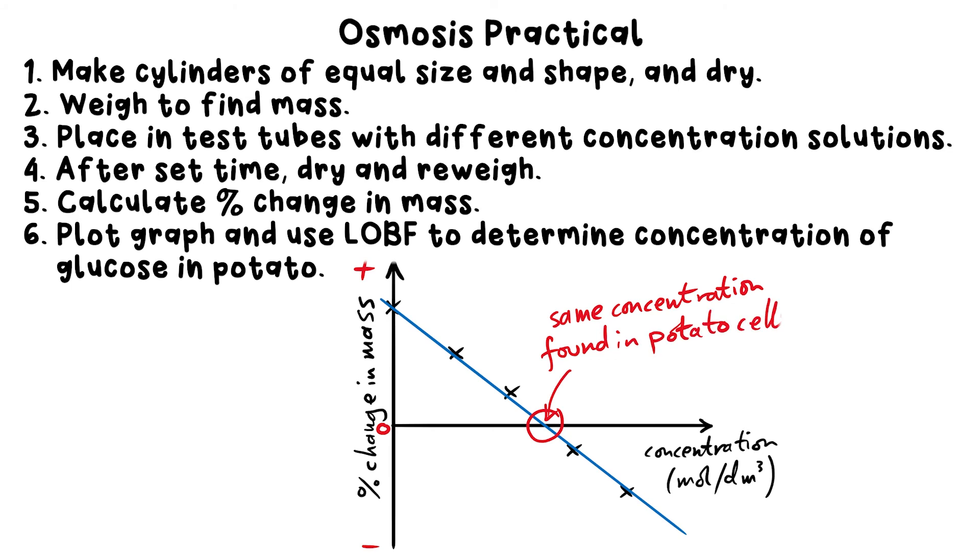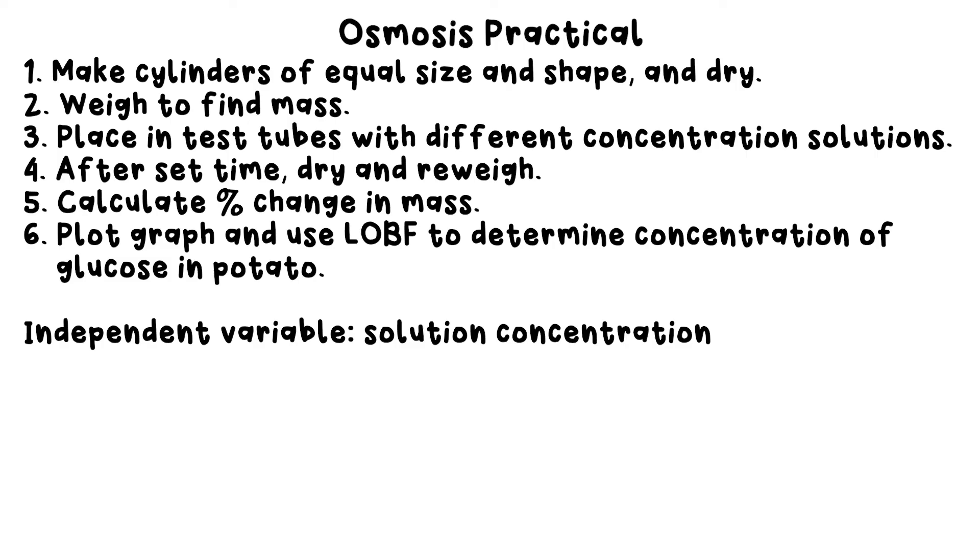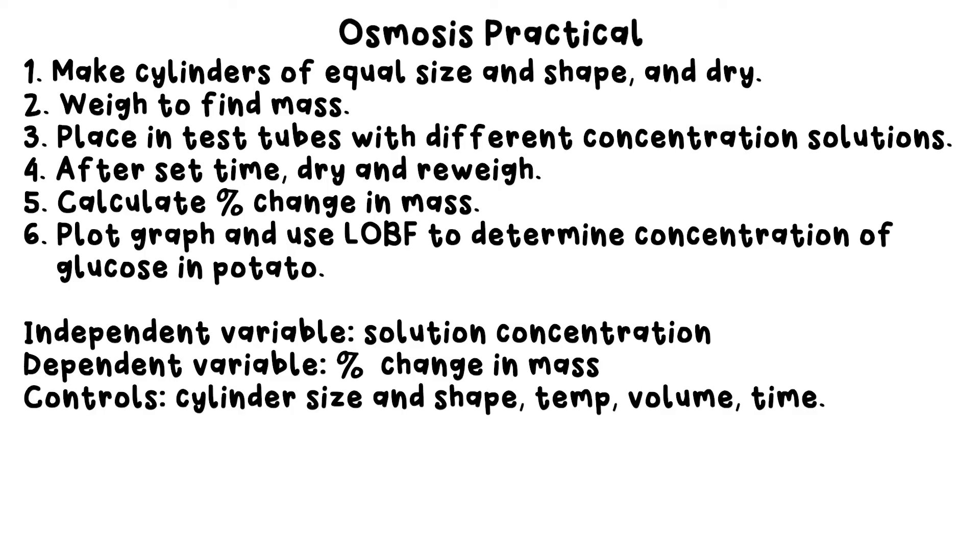And we can say that the variables are these: the independent variable is the concentration of solution. Dependent variable is the percentage change in mass of potato cylinders. Controls are same size and shape of cylinders, the temperature, volume of solutions used, and the time they're left for.